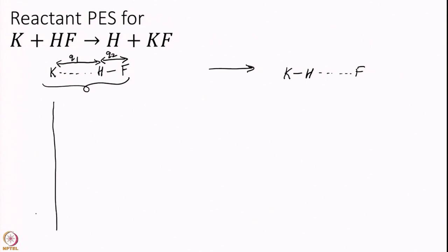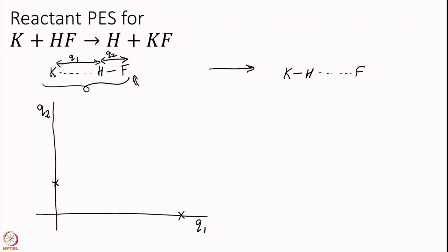I will place Q1 on one axis and Q2 on the other and draw contour plots of the potential energy surface. In the reactant state, I expect Q2 to be small — roughly the HF bond distance, about one angstrom — and Q1, the K–H distance, to be much larger. So this point corresponds to the reactant configuration: large Q1 and Q2 at the HF equilibrium bond distance.